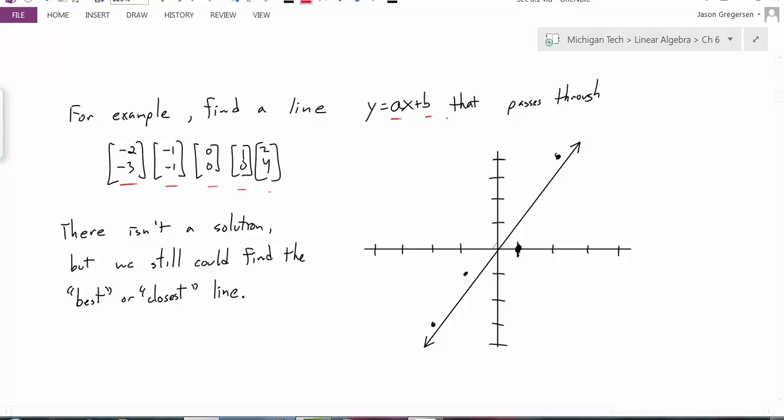But if I wanted to solve this system, it would be inconsistent. It wouldn't have a solution. But I know that there should be a line that maybe is the best line to pass through the set of points. For instance, I would think that this line would be a better fit to this set of points than this line. But how can I be sure and how can I choose the best one?